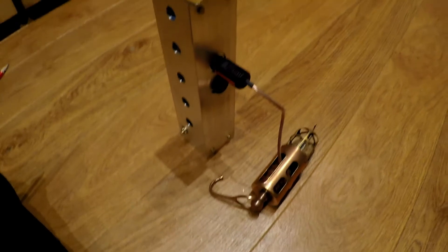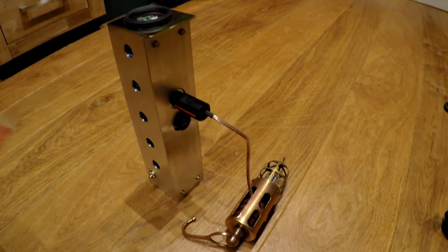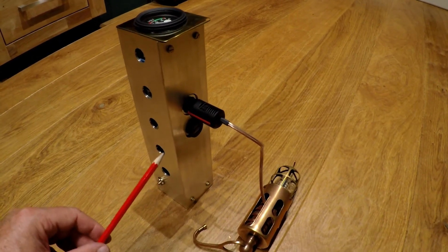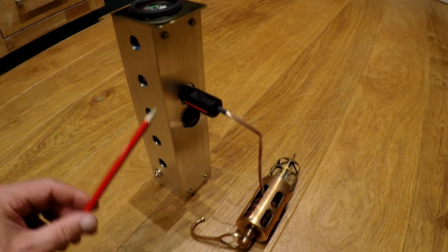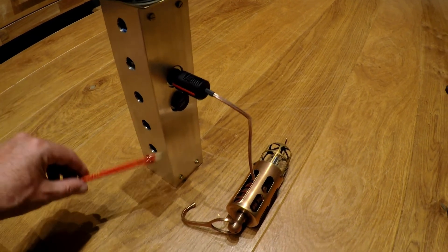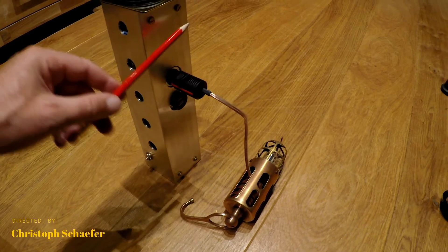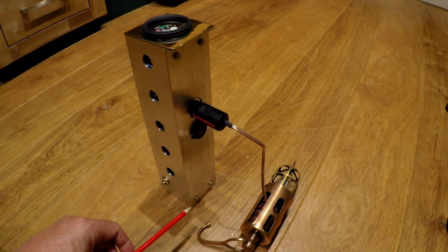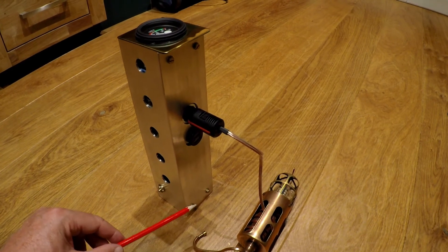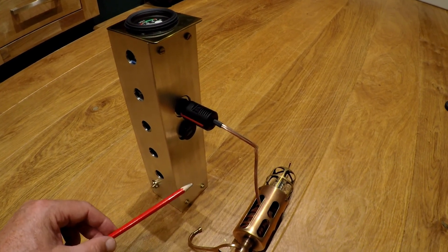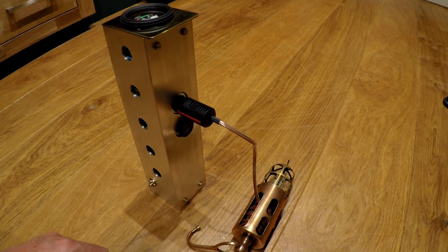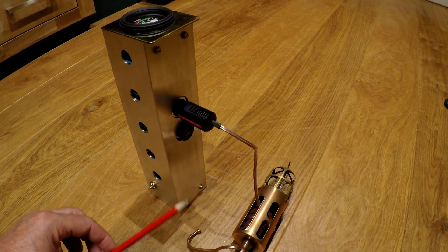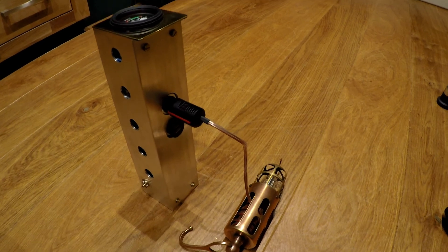And for the next part of the project I will dismantle the whole thing and then I will paint this housing here in the typical Amphora red which I use for all parts inside of Amphora. This I will show you in a separate video.